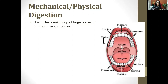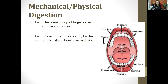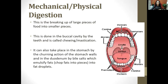Mechanical digestion is the breaking up of large pieces of food into smaller pieces. This happens when you chew — another word for chewing is mastication. Chewing takes place in the mouth, the buccal cavity, using the teeth. It can also take place in the stomach, where there are no teeth, so it's the stomach walls that churn the food.